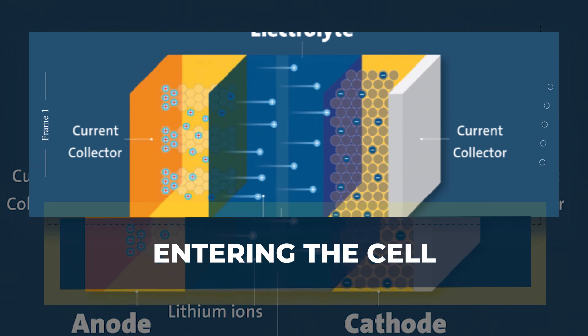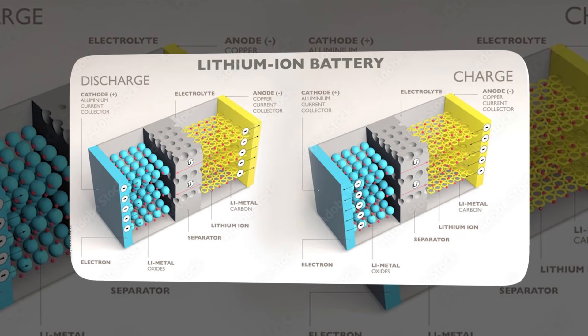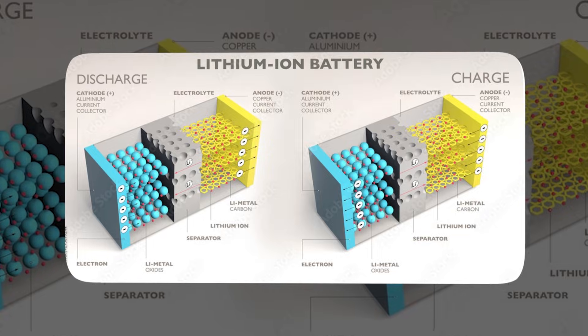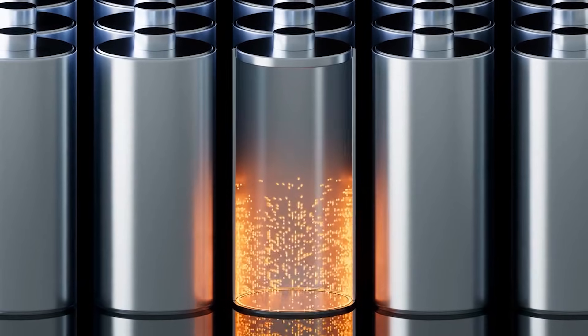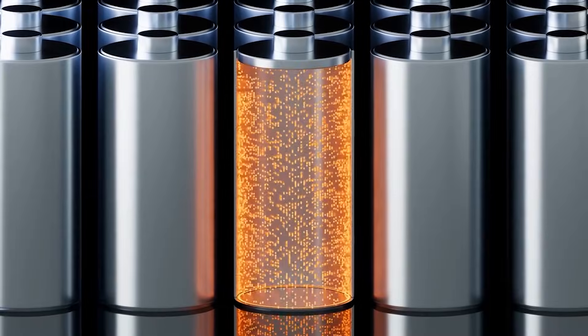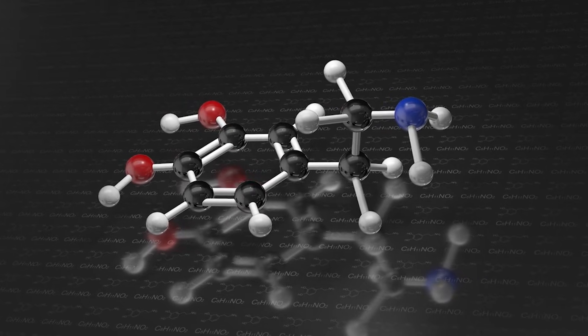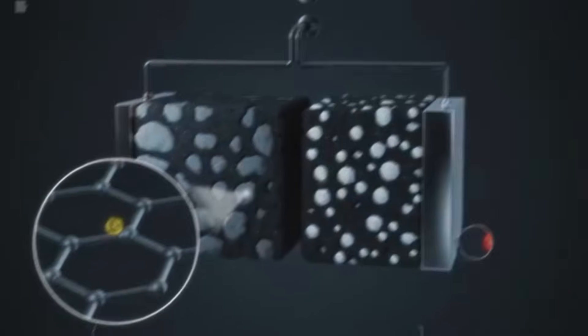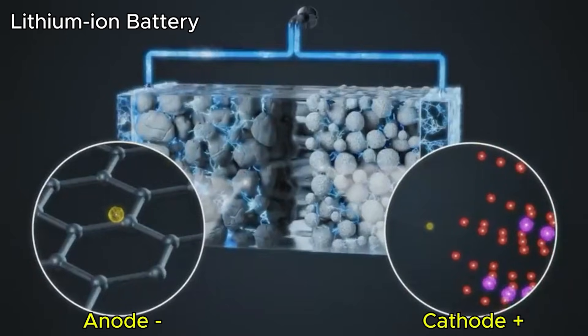Entering the cell: Imagine a lithium-ion cell as a stack of paper-thin sheets, rolled or layered into a can or pouch. On each side, there is a metal current collector—the highway for electrons inside the solid parts. Coated onto that metal is active material, mixed with binder and conductive carbon, so the layer doesn't crack, and electrons can find a path. One coated stack becomes the cathode side, another becomes the anode side.